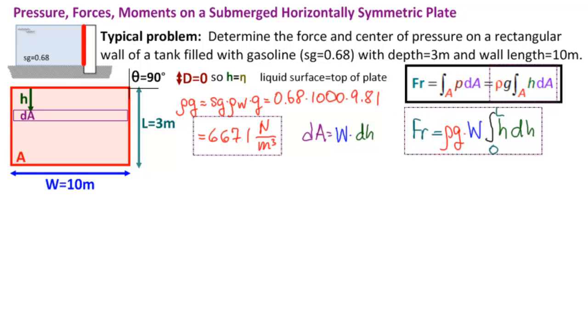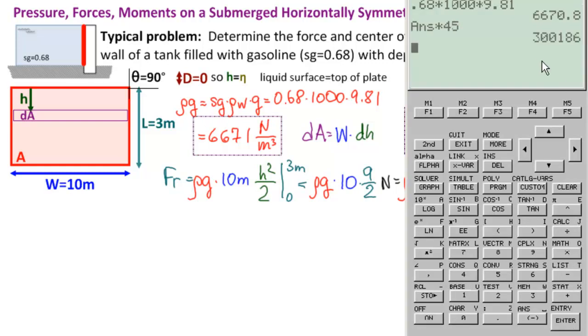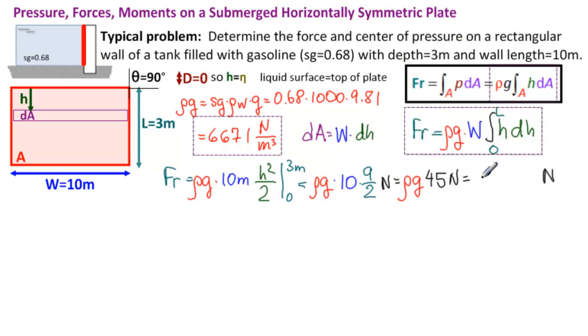So now we're ready to substitute in. But we're going to hang on to ρg until the end. So what do we have? We have FR equals ρg times 10 meters times the integral here. That's H squared over 2. And we're going from 0 to 3 meters. So we have meters, meters squared, meters cubed. So we end up with newtons. We'll just put the newtons over here. So we have ρg times 10 times 9 over 2 newtons equals ρg. 10 times 9 is 90 over 2, 45 newtons. And now we'll multiply by our 6671. So times 45. 300,186 newtons. So 300,186 newtons. That is our answer for the force.